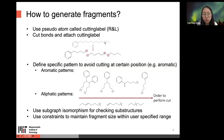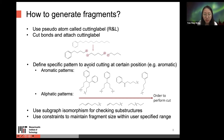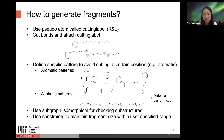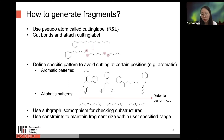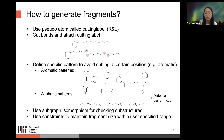To generate fragments, suppose we have a very large starting material. By searching for potential cutting positions, we obtain pseudo atoms called cutting labels — either R or L — attached at each cutting position. We also define specific patterns to avoid cutting at certain positions, such as aromatic C-C bonds. There are two types of patterns: aromatic and aliphatic. Cutting proceeds from the most complicated pattern matching to less complicated ones, using subgraph isomorphism for checking substructures, with constraints to maintain fragment size within a user-specified range.